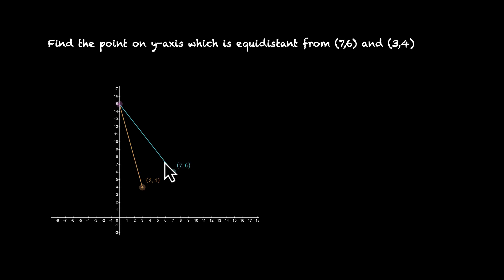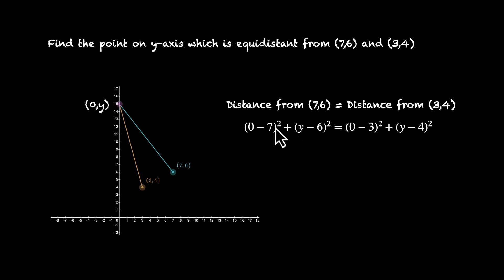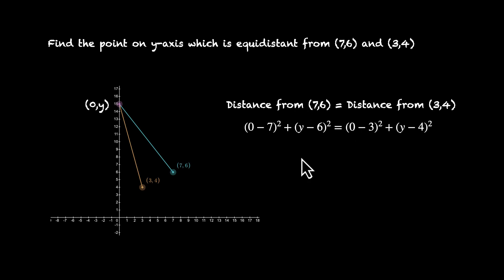Let's do this together. Because the point is on the y-axis, we can assume it's (0, y). We know its x-coordinate is 0 and its y-coordinate is what we need to find. Using the distance formula: the distance from (7, 6) equals the distance from (3, 4). That gives us √((0−7)² + (y−6)²) = √((0−3)² + (y−4)²). Getting rid of the square root, we have this equation to solve.